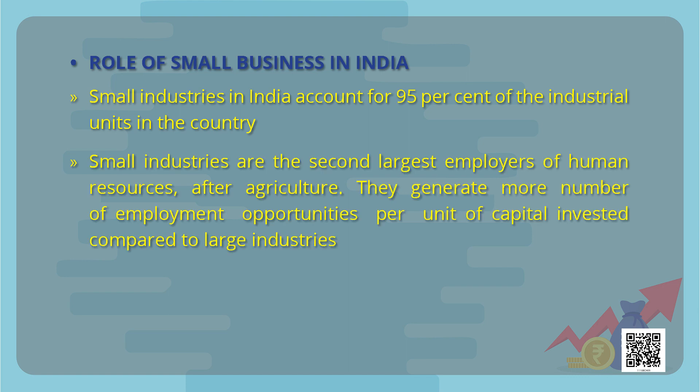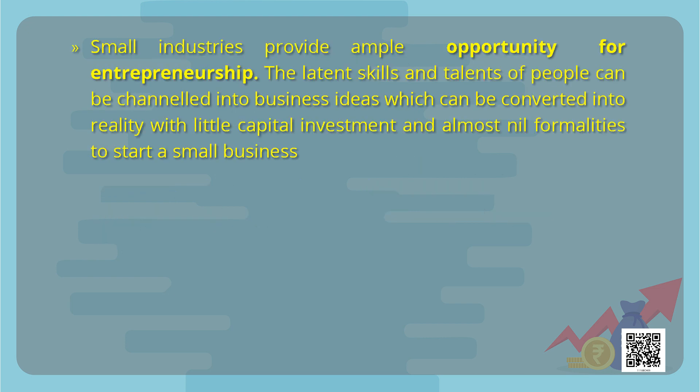Secondly, small industries are the second largest employers of human resources after agriculture. So if we keep agriculture aside, then out of all industries, the small sector is the largest employer in the country. Thirdly, small industries in our country supply an enormous variety of products — from mass consumption goods to ready-made garments, stationery, soaps, detergents, utensils, leather, plastic, and rubber goods. They also enjoy the advantage of low cost of production since they basically use labour-intensive techniques, which provides a platform for many people to earn a livelihood.